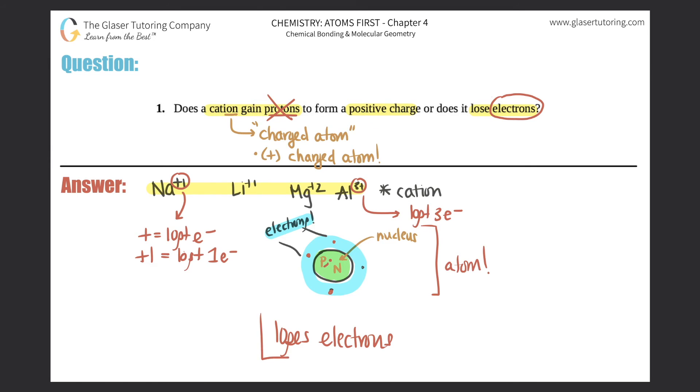On the flip side, anions are the negative charge ions. So negative means that gain electrons. So cations always lose electrons. Anions always gain electrons. Simple as that.